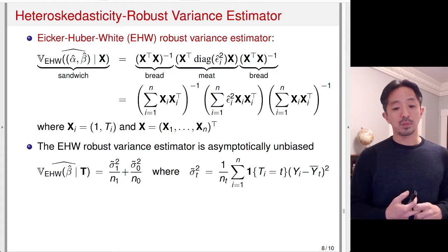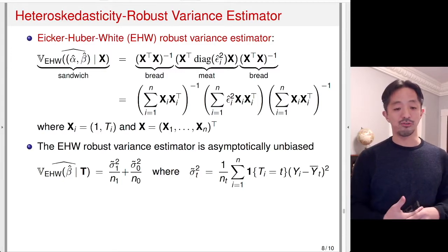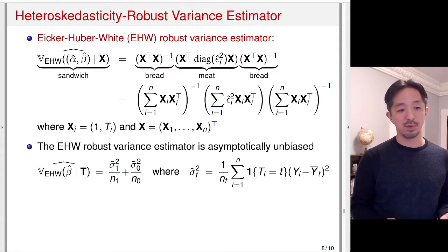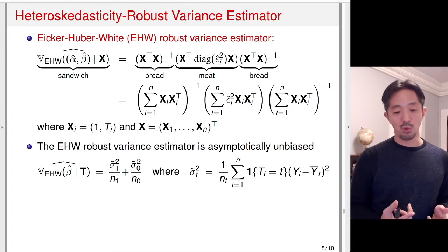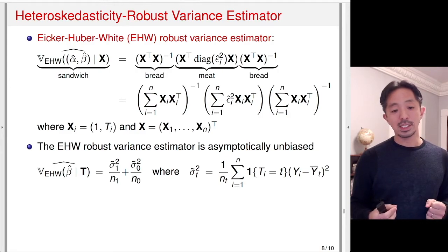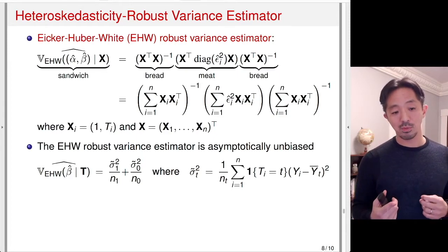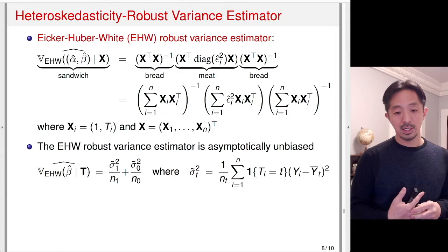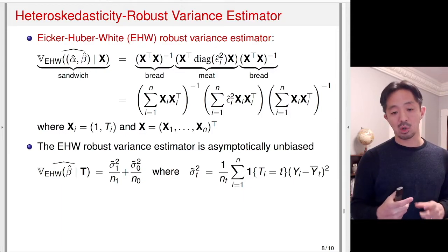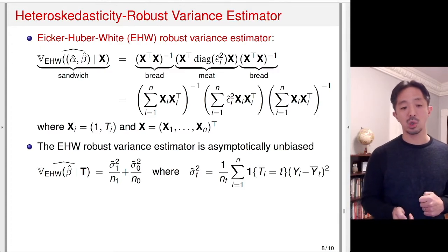This EHW robust variance estimator is asymptotically unbiased even when the homoskedasticity assumption is violated. When the treatment is binary, the robust sandwich estimator can be written in a form very similar to Neyman's variance. The only difference is that the denominator uses N_t (the treatment or control group size) rather than N_t minus 1 as in the Neyman estimator — that's the only distinction.